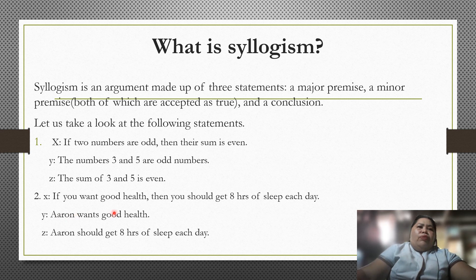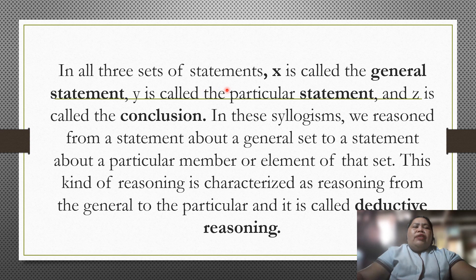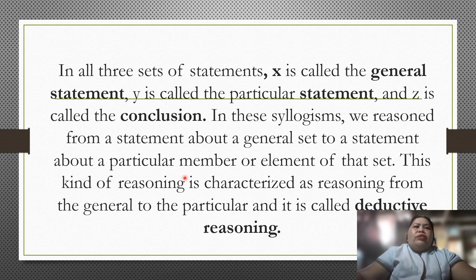Next example: if you want good health, then you should get 8 hours of sleep each day. Y — Aaron wants good health. Therefore Z — Aaron should get 8 hours of sleep each day. In all three sets of statements, X is the general statement, Y is the particular statement, and Z is the conclusion. This kind of reasoning — from the general to the particular — is called deductive reasoning.